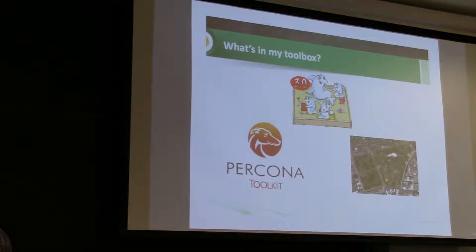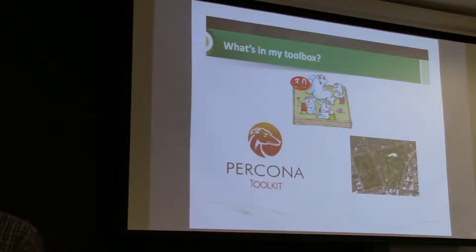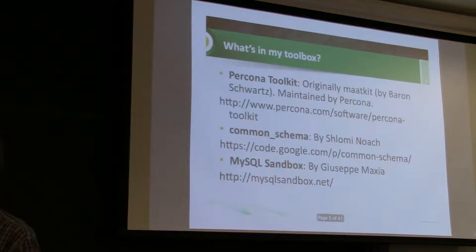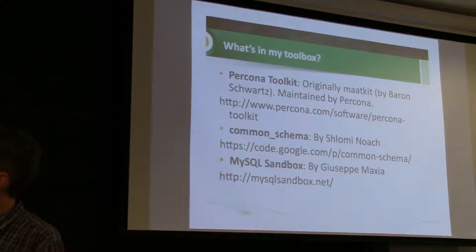Percona Toolkit is one that almost everybody knows about. It's distributed by Percona and is a whole bunch of different tools that do a lot of different things — mostly written in Perl. If you look through it, I'm sure you can find at least five or six tools you'll find useful. The third tool doesn't have a logo — anybody recognize it? It's the Boston Common. I chose that for Common Schema, which is a tool that Shlomi Noach made — another favorite of mine — but he didn't make a cute logo, so I had to use the Boston Common instead.